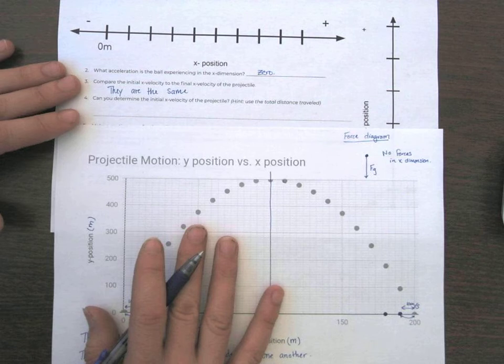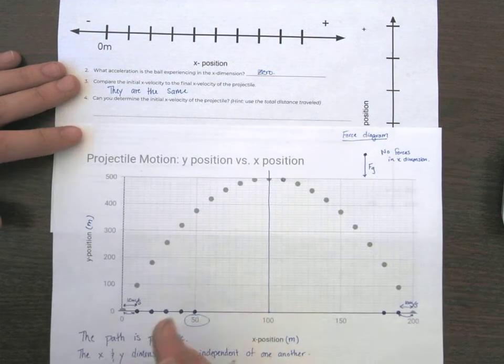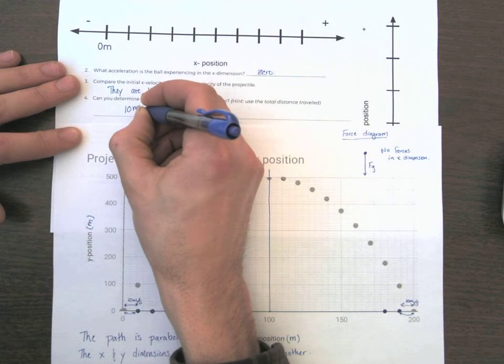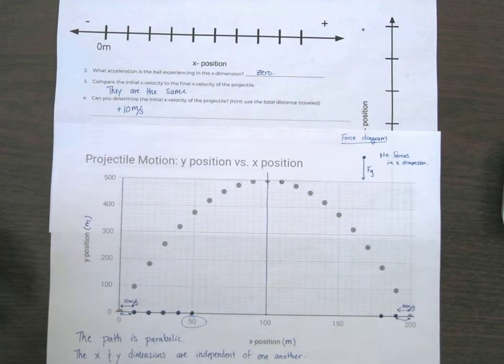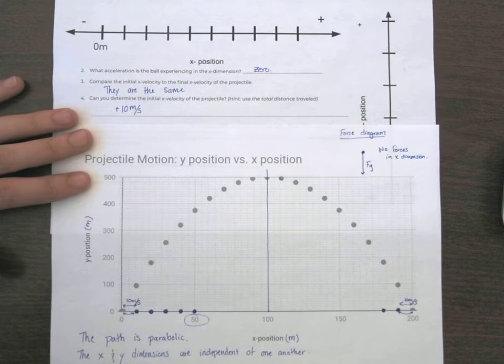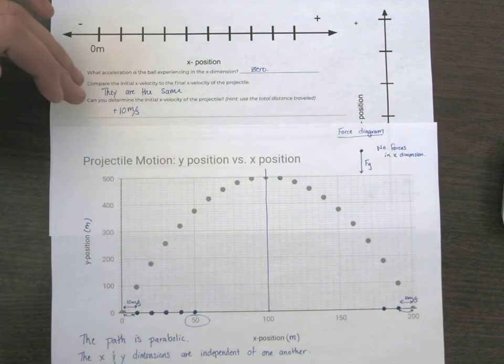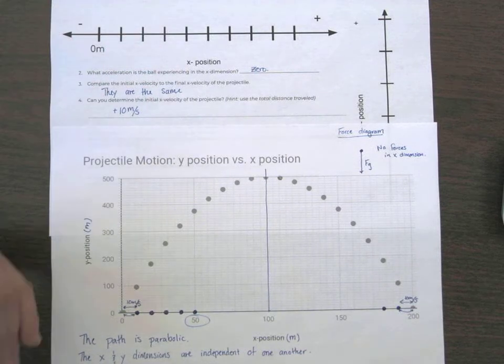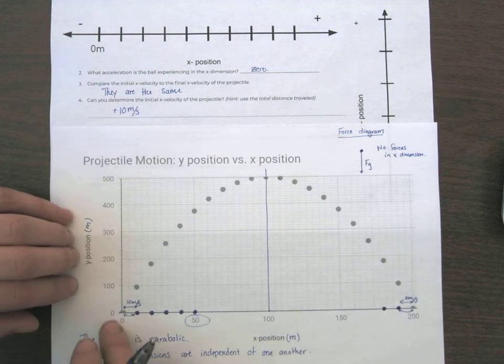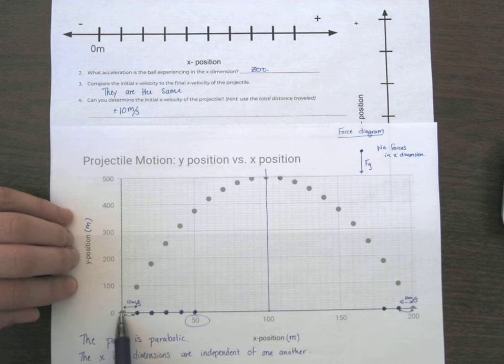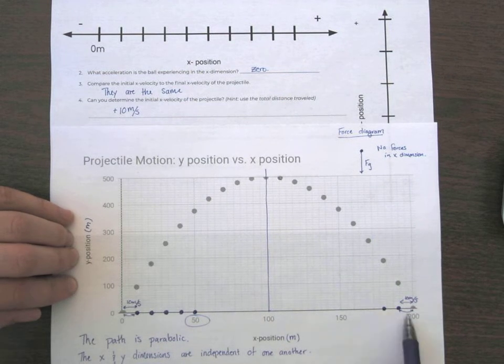And can you determine the X velocity of the projectile? We just did. At any point along this X, we know that it's going 10 meters per second. We can put a positive there. So that all kind of fits our understanding of the X dimension, which means everything's constant, the acceleration's zero, the initial, final, and any velocity along the way should all be the same. And we can figure that out using anything that it's 10 meters per second. We can say that, you can use the lines to say, that's 10 meters in one second. You can say 50 meters in five seconds. You can say 100 meters in 10 seconds. 200 meters in 20 seconds. They all give you an answer of 10.